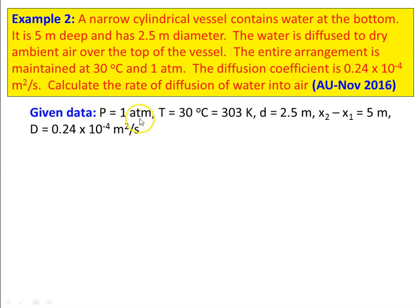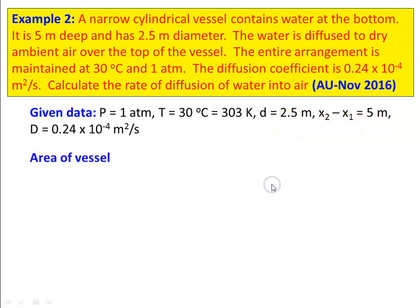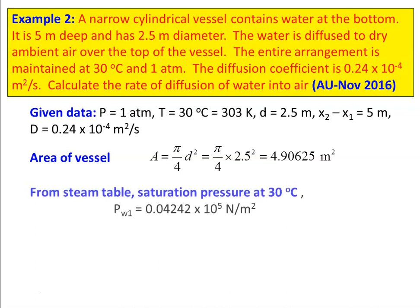The total pressure is 1 atmosphere. Temperature is 30 degree Celsius, which is 303 Kelvin. Diameter equal to 2.5 meter and x2 minus x1 equal to 5 meter. The diffusion coefficient is 0.24 into 10 power minus 4 meter square per second. The area of the vessel equal to pi by 4 d square, which is pi by 4 into 2.5 square equal to 4.9065 meter square.